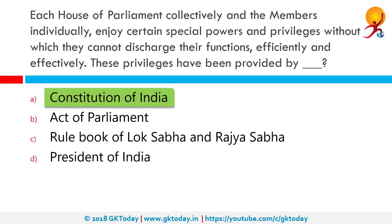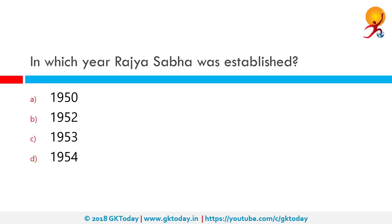The Constitution provides every required privilege that a member of either house needs to perform their duties. In which year was Rajya Sabha established? Rajya Sabha was established in the year 1952. 13th May 1952 is remembered as the day when the newly constituted Council of States sat together for the first time. This second chamber of Parliament was later named as the Rajya Sabha on 23rd August 1954.